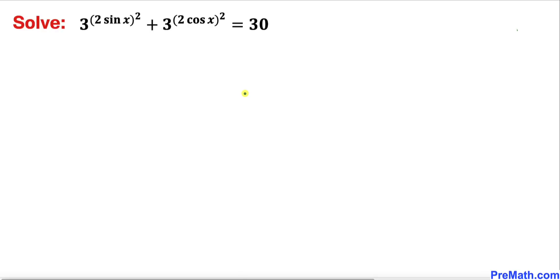Welcome to Pre-Math. In this video we are going to solve this given trigonometric equation: 3 to the power of (2 sin x)² plus 3 to the power of (2 cos x)² equals 30.